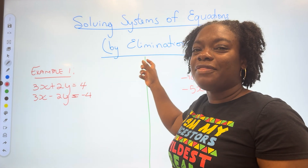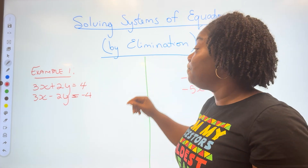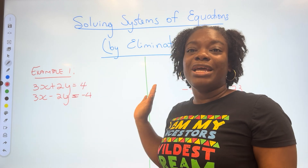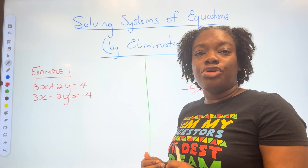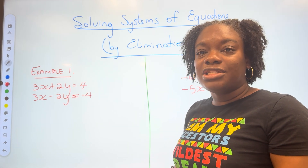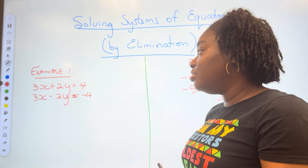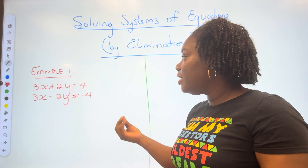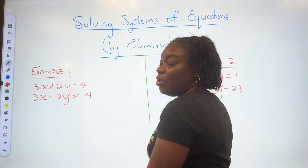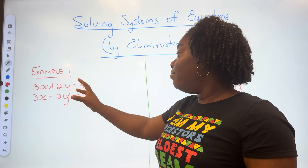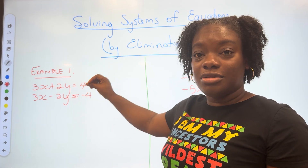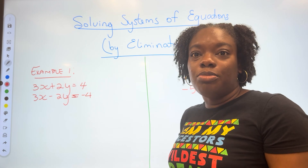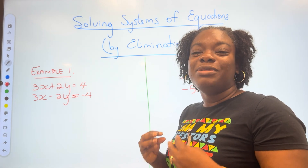When we are using the elimination method, as the name suggests, you're going to find one of the variables that you can get rid of. In order to do that, the coefficients of those variables must be the same. In example one, both variables have their coefficients being the same or being opposites, which is okay.